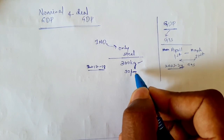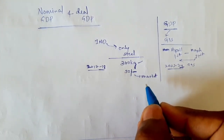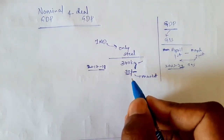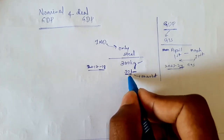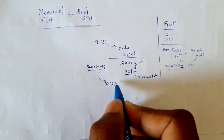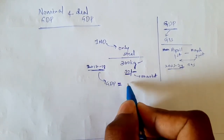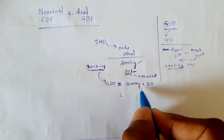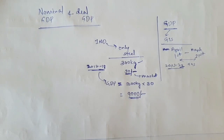The price of 30 rupees is the market price — the price that consumers pay at the market. This price includes everything: indirect tax, production cost, everything. This is the final price in the market. So the GDP of the country in 2017-18 is calculated as 300 kg multiplied by 30 rupees, which gives us a GDP of 9,000 rupees.